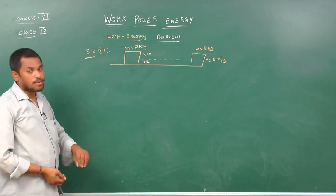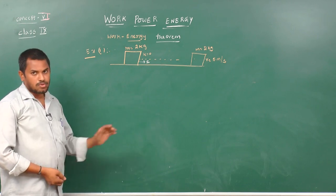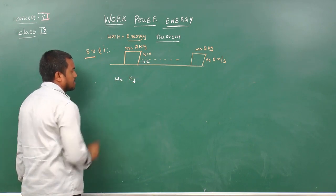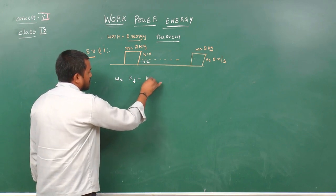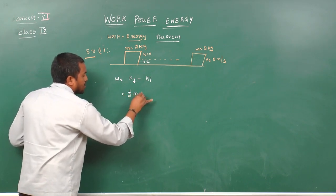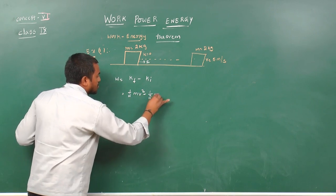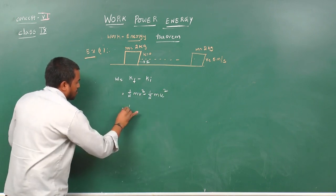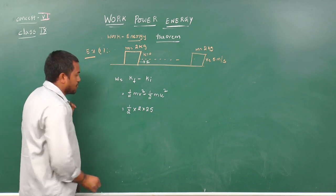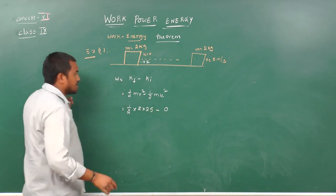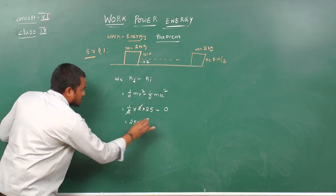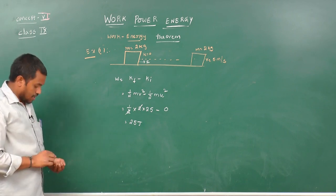According to the work energy theorem, work done by all forces equals change in kinetic energy. So, work done equals final kinetic energy minus initial kinetic energy, which is one-half m v squared minus one-half m u squared. Mass is 2 kg, final velocity is 5 m/s, so work done equals one-half times 2 times 5 squared minus 0 (since initial velocity is 0). The 2s cancel, giving 25 joules.